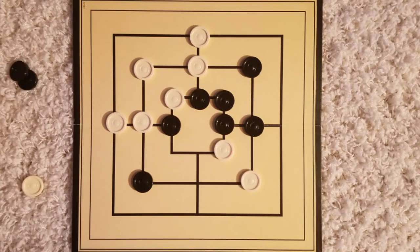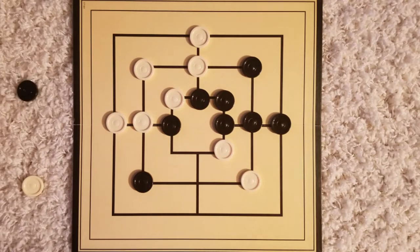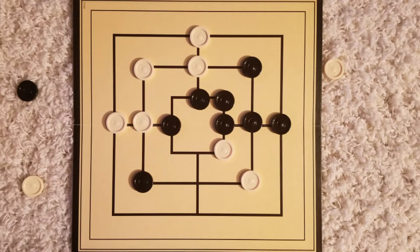If at any point you are able to get three pieces in a row, either vertically or horizontally, this is called a mill, and you can remove any of your opponent's pieces from the game if you have a mill.